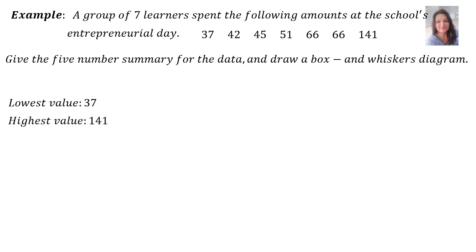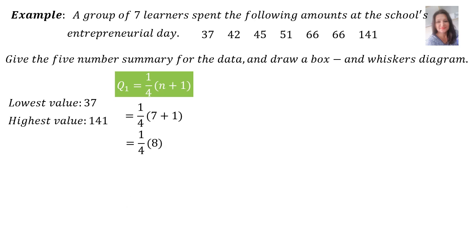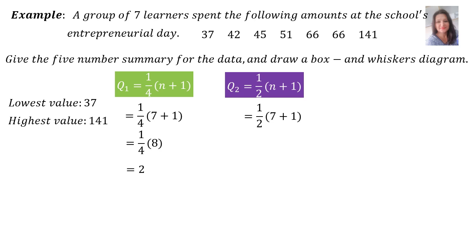Now let's work out the position for Q1. The formula is a quarter times (n + 1). There are seven data entries, so it's a quarter of (7 + 1) = a quarter of 8 = 2. For Q2, it's half of (7 + 1) = half of 8 = 4, so the median is in position 4. Since Q1 is in position 2, the value is 42, so Q1 = 42. Since Q2 is in position 4, the value is 51.